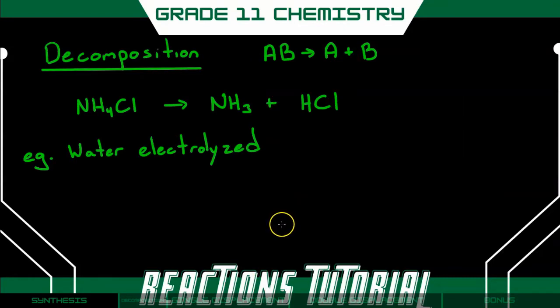Next, let's look at a decomposition reaction. This is the opposite of a synthesis reaction. If we start with something complex and it splits into simpler elements, then that is what we call a decomposition reaction. So for example, here I have ammonium chloride, and it's going to split into ammonia and hydrogen chloride.